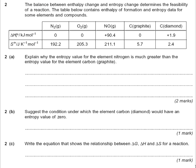Okay, let's continue. Question 2. I really like these questions. The balance between enthalpy change and entropy change determines the feasibility of a reaction. The table below contains enthalpy formation and entropy data for some elements and compounds. Explain why the entropy value for the element nitrogen is much greater than the entropy value for the element carbon, graphite.